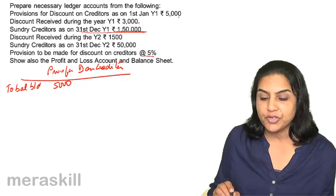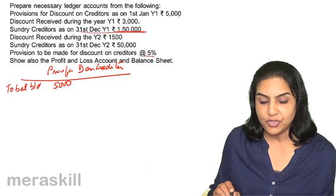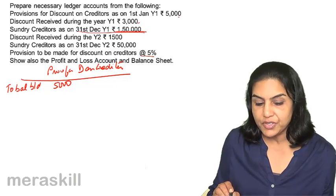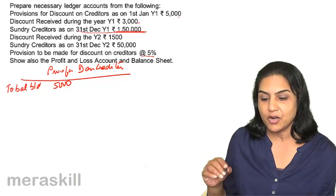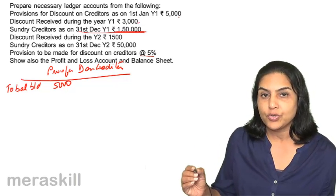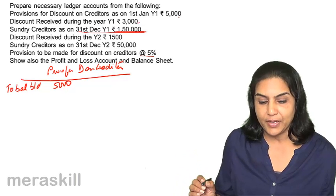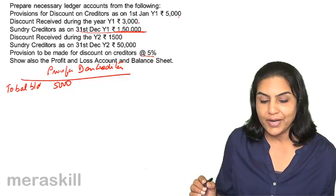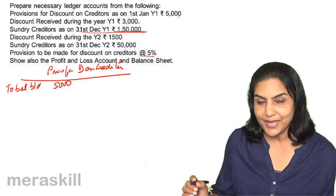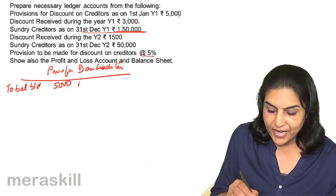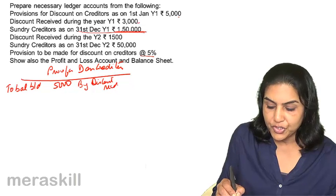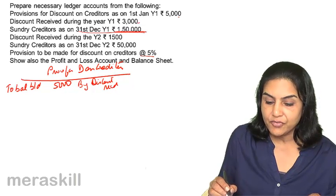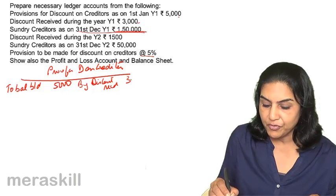Discount received during the year is 3000. The entry for discount received is: creditors account debit, to bank, so credit. Discount received is an income — we debit that and transfer it to the provision for discount on creditors, which is an amount of 3000.